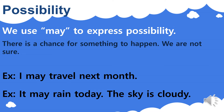But am I sure that it will rain? No, I'm not sure. But I can see a big chance for it to rain today because the sky is cloudy. So I have a chance for something to happen, and I can use the modal verb may.